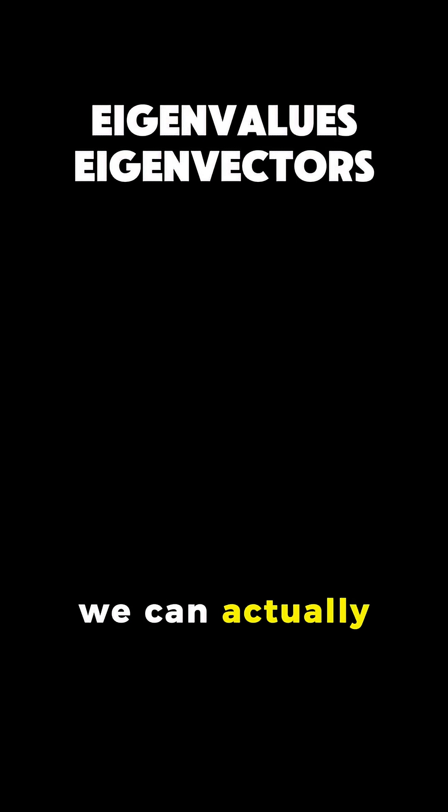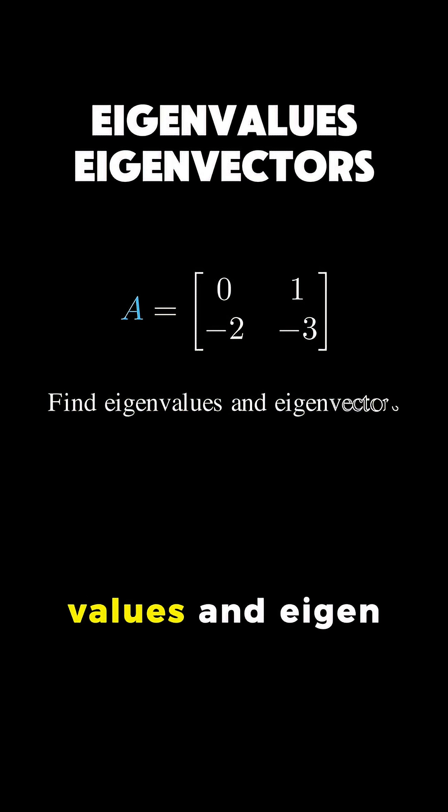Now let's see how we can actually calculate these values. Suppose we have a 2 by 2 matrix A with entries 0, 1, negative 2, and negative 3. We want to find the eigenvalues and eigenvectors for this matrix.